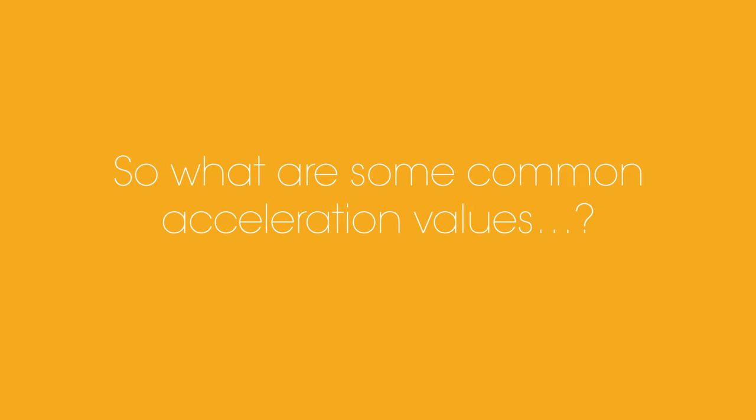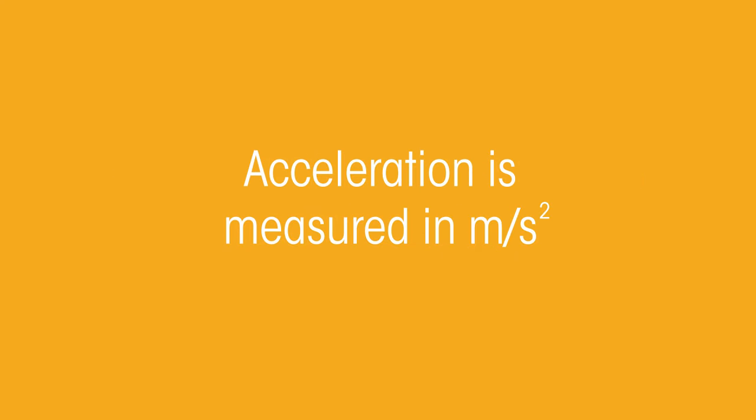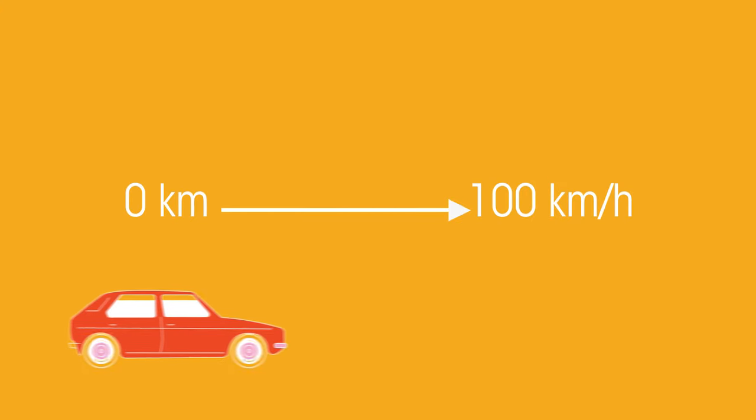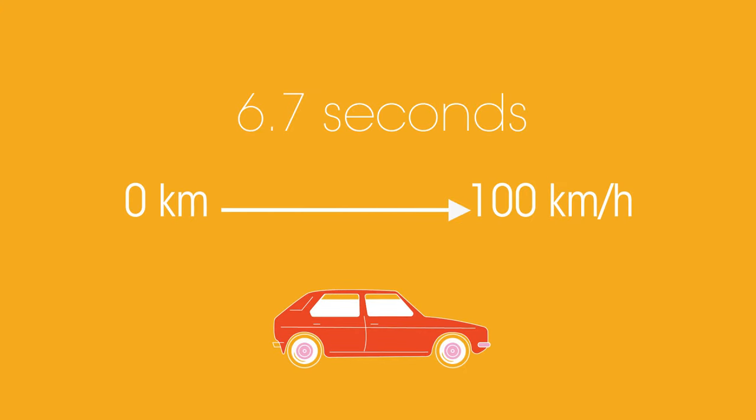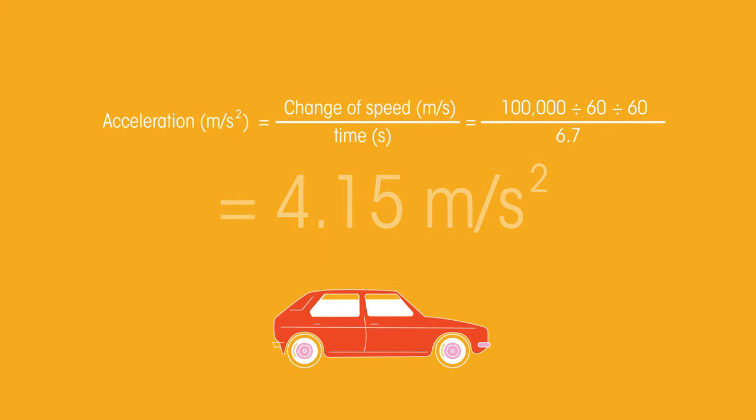So what are some common acceleration values? We already know acceleration is measured in meters per second squared. A common hatchback car can reach 100 kilometers an hour in 6.7 seconds. This gives it an acceleration of 4.15 meters per second squared.